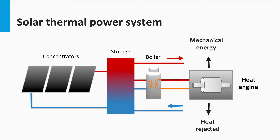These systems consist basically of a collector where the solar energy is absorbed, a storage system — usually water or phase change storage — a boiler that acts as a heat exchanger between the operational fluids of the collector and the heat engine, and the heat engine itself, which converts the thermal energy to mechanical energy. This mechanical energy can be further used in an electrical generator. Usually collectors include concentrator systems, to be able to reach the high temperatures that heat engines need to operate at.